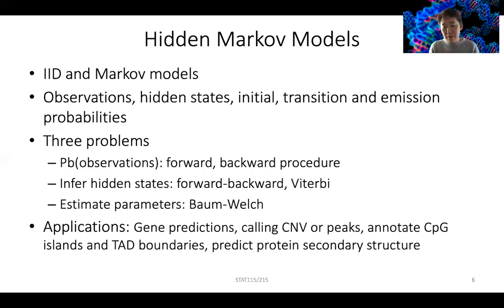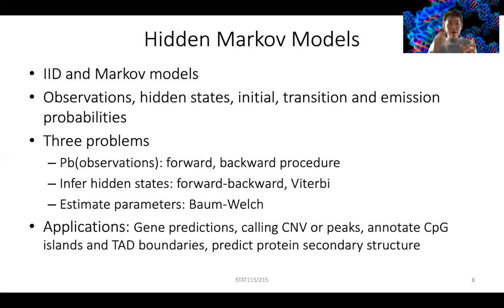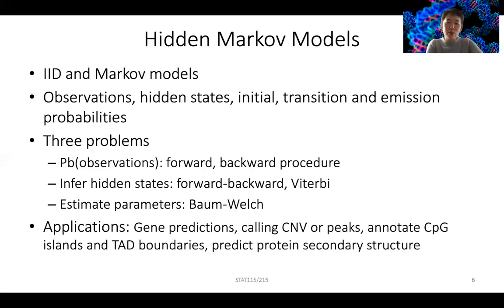People have also used HMMs to predict protein secondary structure: if you have the observed amino acids, can you guess whether this stretch will be a helix, strand, or loop? The helix, strand, and loop are the hidden states. It's a really widely used algorithm, and people should learn how to implement it in R or Python. There are standard modules you can use, but we ask students to do a little coding to see how it really works.